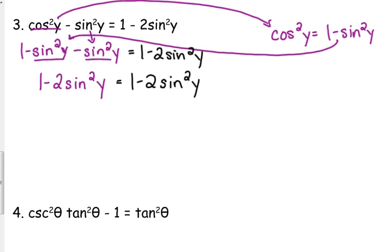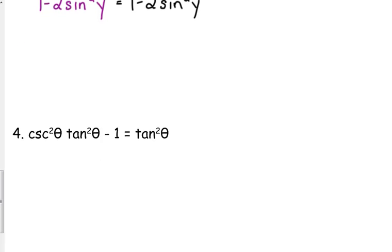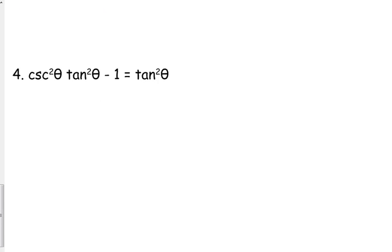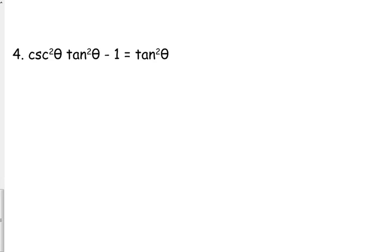We're going to do one more like this and then I'll let you guys practice on your own. Cosecant squared theta times tangent squared of theta minus one is equal to tangent squared theta.